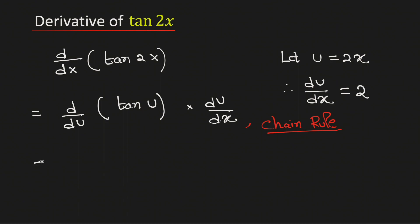Now we know that the derivative of tan x is equal to sec square x. Therefore this will be equal to sec square u. And du dx is equal to 2. Therefore this is now equal to 2 sec square 2x, because the value of u is 2x.